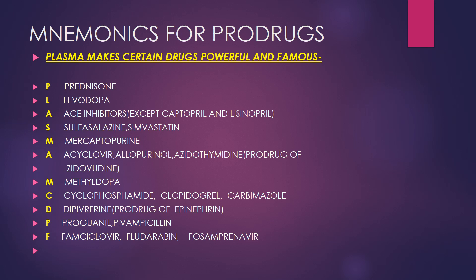These are pro drugs and they need to be converted into active metabolites. The mnemonic is 'PLASMA makes certain drugs powerful and famous.' P for plasma and P for prednisolone.